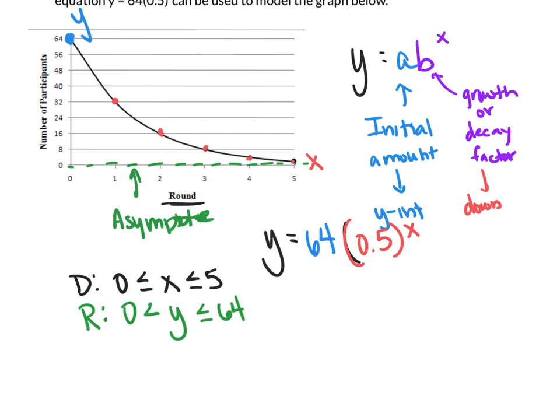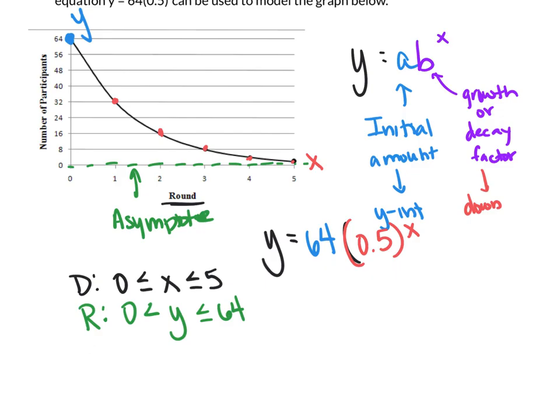So the range represents basically the number of teams that started the tournament and that will end the tournament, which means you can't have 0 teams ending a tournament. One has to win, and you have to start with 64 total. So this is the real-life key features of an exponential function.